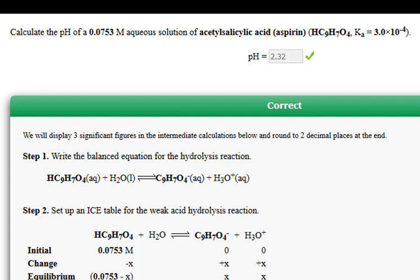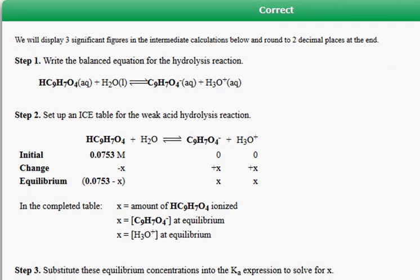In this problem, we're asked to calculate the pH given a concentration of a weak acid and its Ka. We can ignore the x in the denominator, making the approximation that the initial concentration is equivalent to the equilibrium concentration of the molecular form of the weak acid.